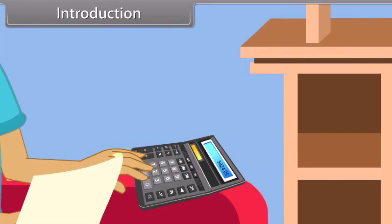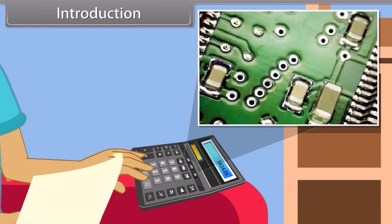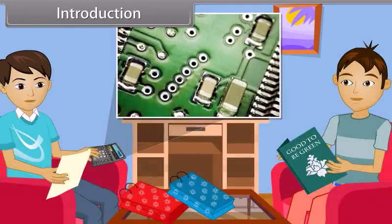A calculator works on the combination of diodes. A diode is a semiconductor device and it can be used for on and off purposes. When the diodes are arranged in a particular manner, they give a specific logical result. Raj responds: 'Okay Amar, now I understand the basic concept of the calculator. It's quite interesting and I want to know something more about it.'